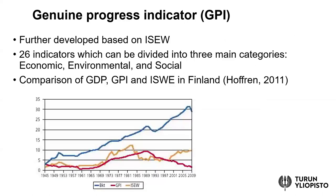There have been further developments, and one of the more serious ones is the Genuine Progress Indicator, GPI, which takes a similar approach to ISEW but incorporates an even larger number of indicators, following the three pillars of sustainable development: economic, environmental, and social.